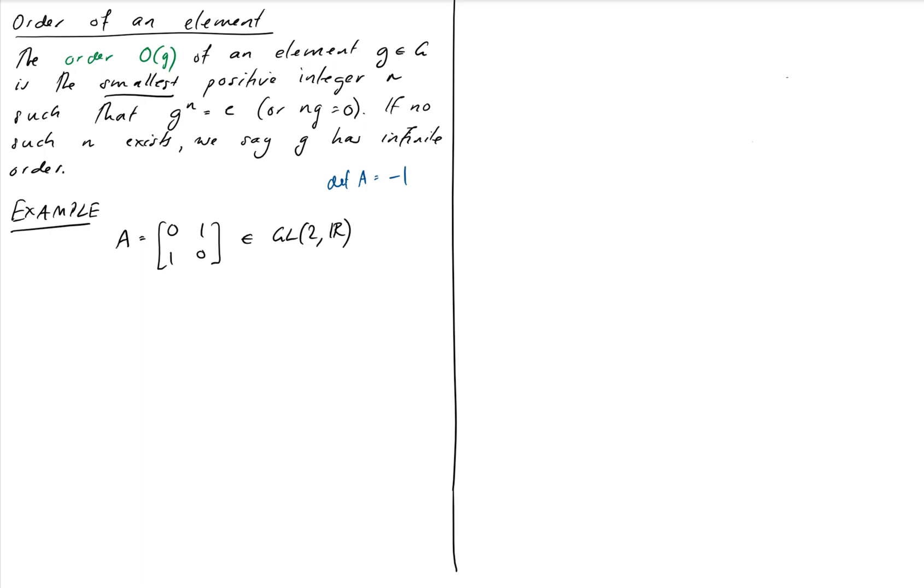Now if I take A, if I want to find its order, I just need to keep multiplying it by itself until I get back to the identity. So A squared, well, that's actually exactly what we want, is the identity equals I. I don't need to go any further. So I say that the order of A is equal to 2 here.